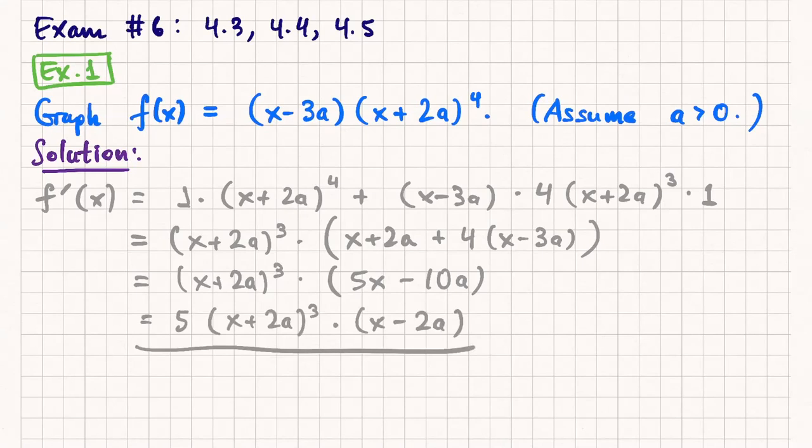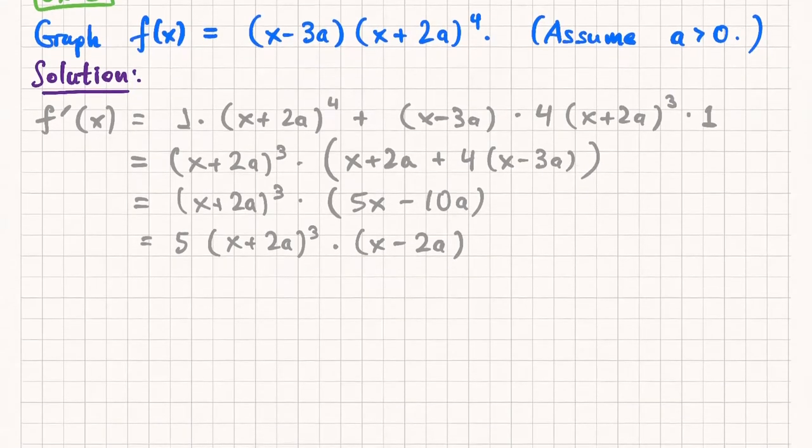So by using product rule and then algebra, everything stays factored. Notice that I do have a fourth degree polynomial, but it's not all expanded out. If I set this equal to 0, it's very easy to find that out. Now, you can imagine if this were all expanded out, would you have been able to factor it back? Probably not.